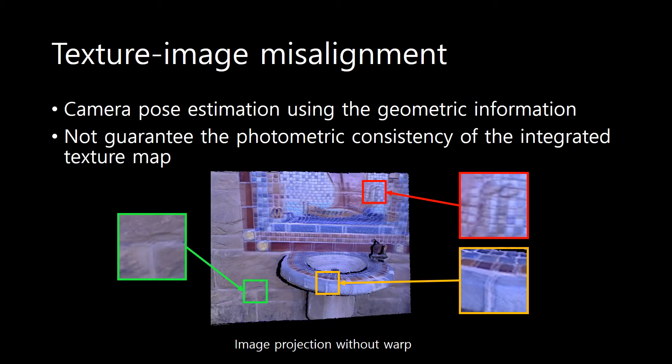Here, we estimate the camera pose of the current frame using the geometric information of the current depth map with respect to the accumulated geometry. Due to asynchronous capture of color and depth information and inaccurate geometry, back projection of the current color image and the texture is not aligned.